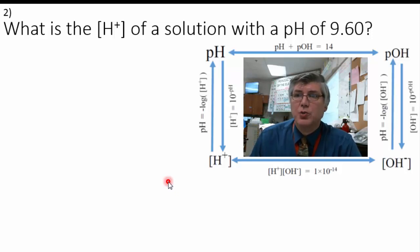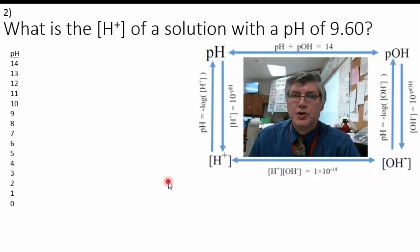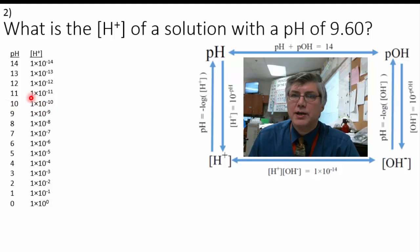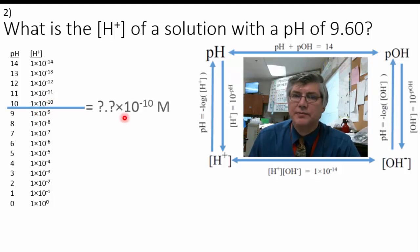Next, let's calculate the hydrogen ion concentration of a solution with a pH of 9.6. We're looking for 9.6, so somewhere in between 9 and 10. Our hydrogen ion concentration will be somewhere between 1 times 10 to the negative 10 and 1 times 10 to the negative 9 — so it'll be something times 10 to the negative 10. We just don't know what.